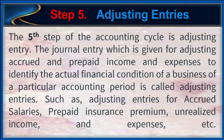Step 5: Adjusting Entries. The fifth step of the accounting cycle is adjusting entries. The general entry which is given for adjusting accrued and prepaid incomes or expenses to identify the actual financial condition of a business for a particular accounting period is called adjusting entries, such as adjusting entries for accrued salaries, prepaid insurance premiums, unrealized income and expenses, etc.